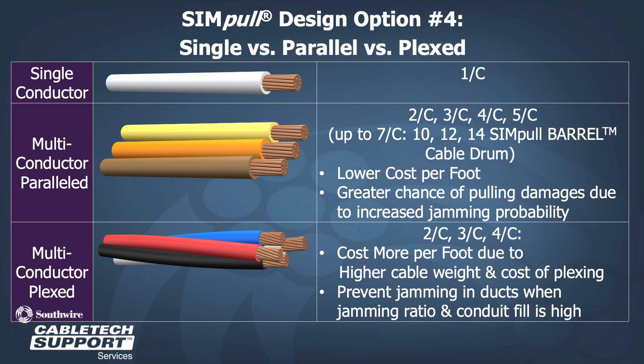Our fourth design option is the cable assembly. Where multiple conductors are being installed, Southwire offers parallel and plexed assemblies. For parallel assemblies, we have two to seven conductor options, which is lower cost per foot compared to plexing; however, when pulling into conduit, it does have a greater chance of pulling damage due to increased probability of jamming. For plexed assemblies, we have two to four conductor options, and this design will prevent jamming when the jamming ratio and conduit fill is high.